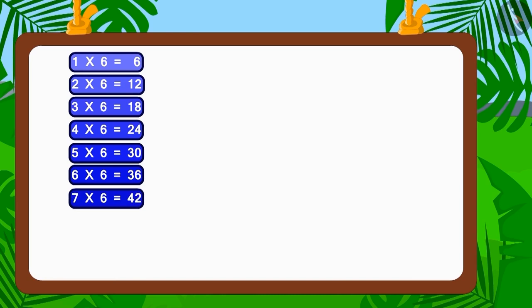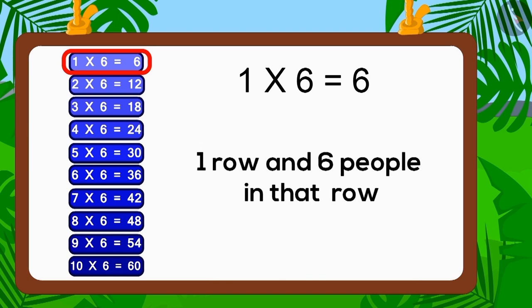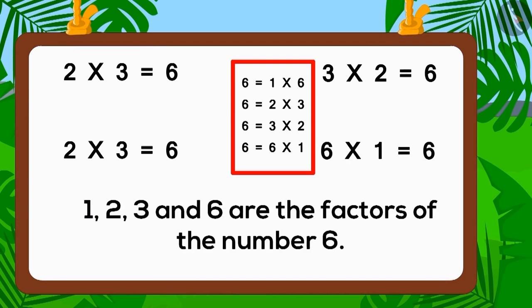Now let's look at the table of 6. Does the number 6 appear in the table of 6? Yes, 1 multiplied with 6 is 6. Therefore, 6 is also the factor of number 6. So one line and 6 people in each line is a good option.